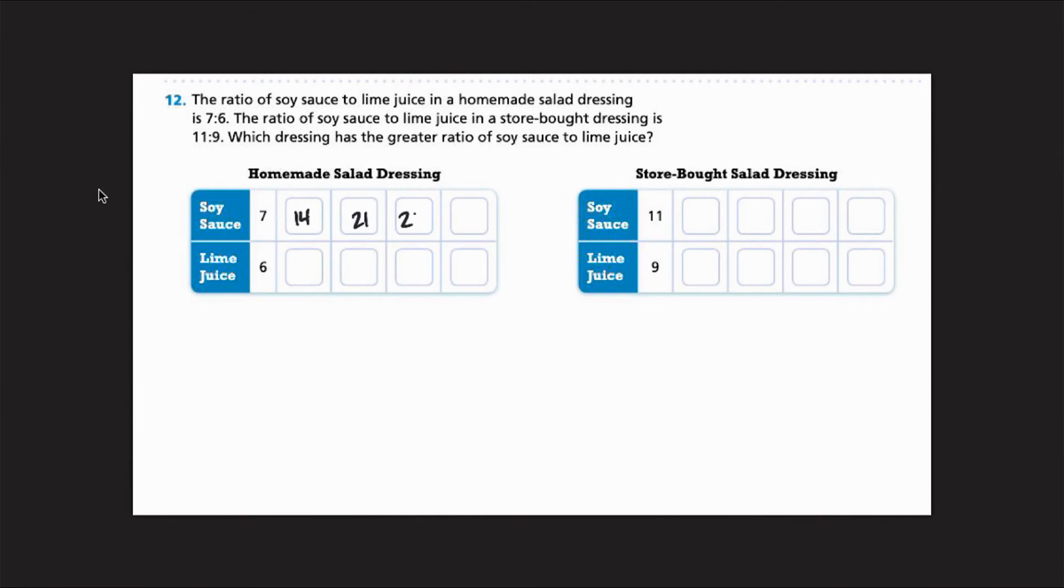So 14, 21, 28, 35, 12. Oh my gosh, my brain went crazy for a second. Okay, fill those in. We'll do the same thing over here. So first thing is, complete your ratio table. 9, 18, 27, 36, 45.